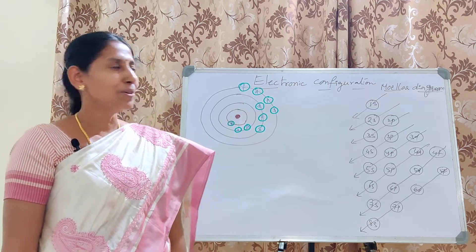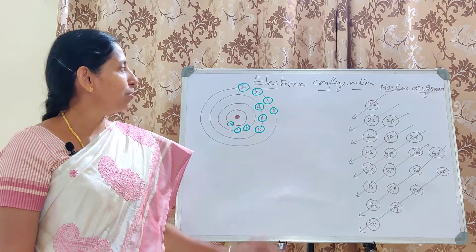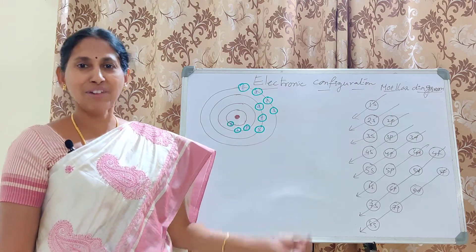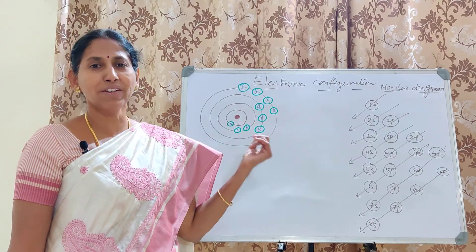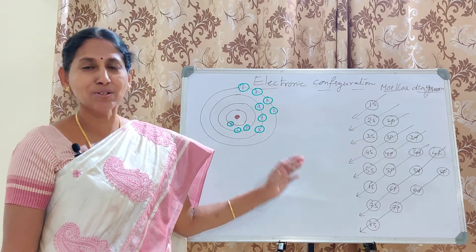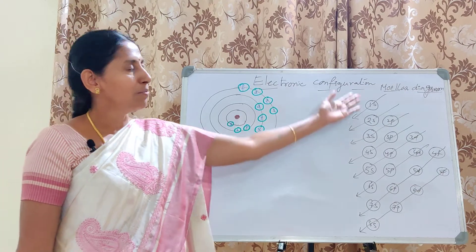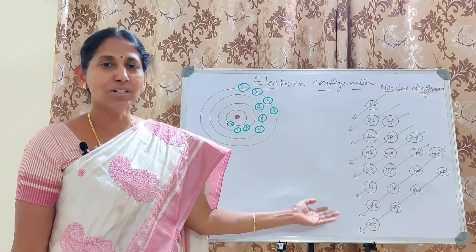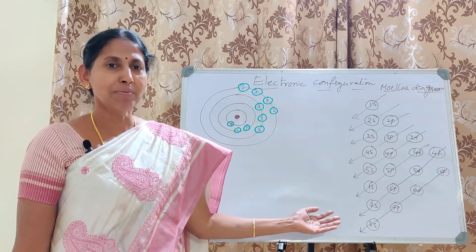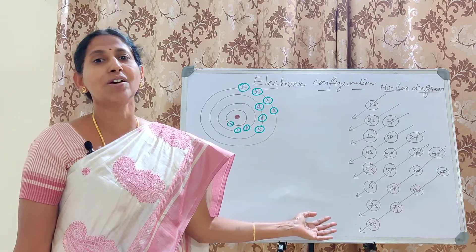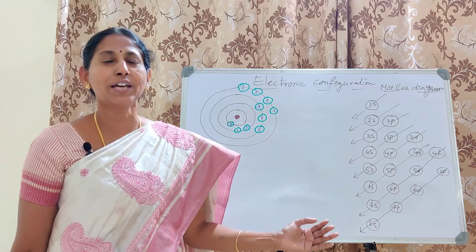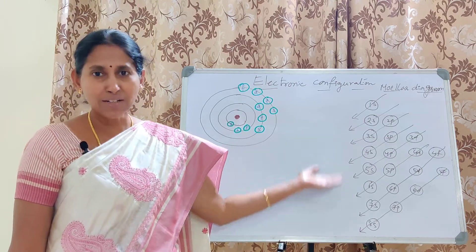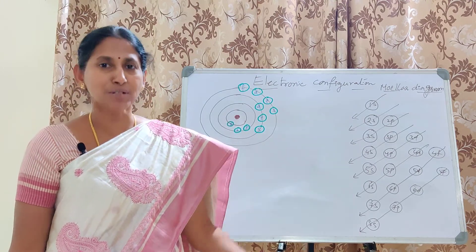Hi students, today I am going to explain how to write the electronic configuration in an easy way. This is the easiest way for writing the electronic configuration. Here I am using the Moler diagram. Though it is not much relevant, it helps us to write the electronic configuration of 30 to 40 elements correctly. That is the reason why even today we are still using it.